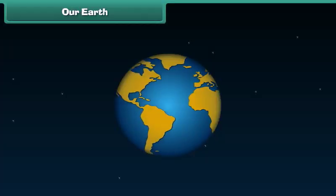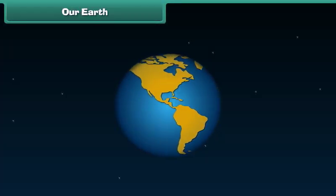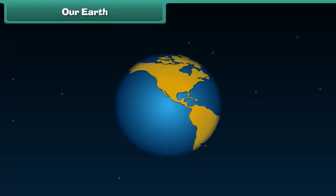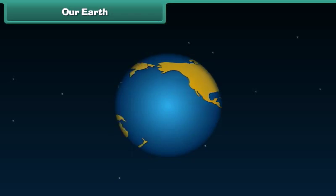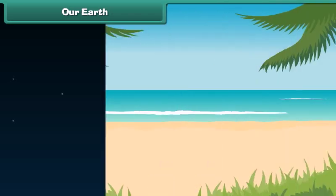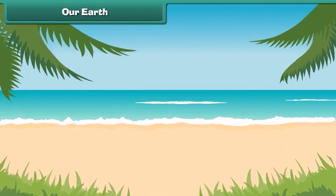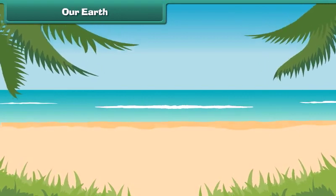Friends, we live on a planet called Earth, which is round in shape, just like an orange. It has a sky above and oceans filled with water below.